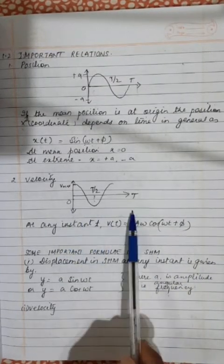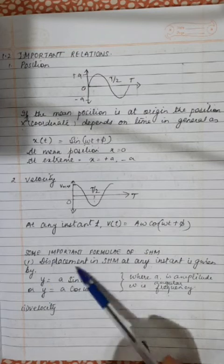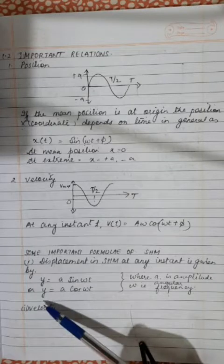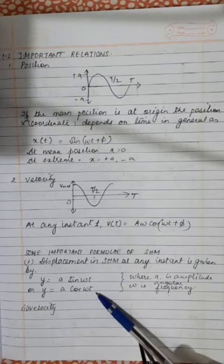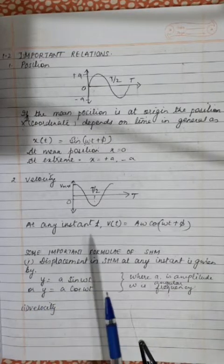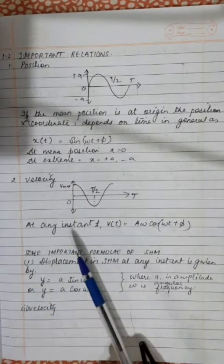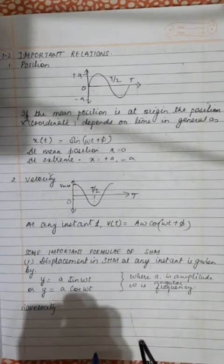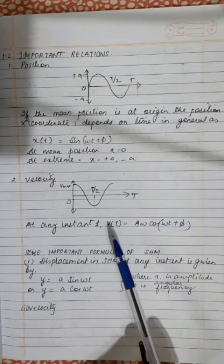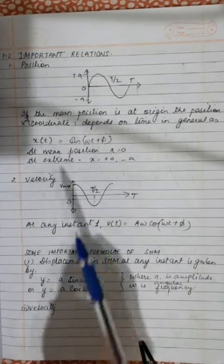Some important formulae: displacement in SHM at any instant is given by y = A sin(ωt) or y = A cos(ωt), where A is the amplitude and ω is the angular frequency. These waves can be called sine waves or cosine waves because if you draw amplitude versus time or velocity versus time for a wave, you get a sine wave or cosine wave and the shape will be the same.